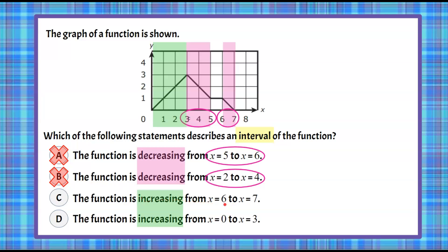Now, let's look at 6 to 7. Between 6 and 7, it's decreasing, not increasing, so we can rule out C.